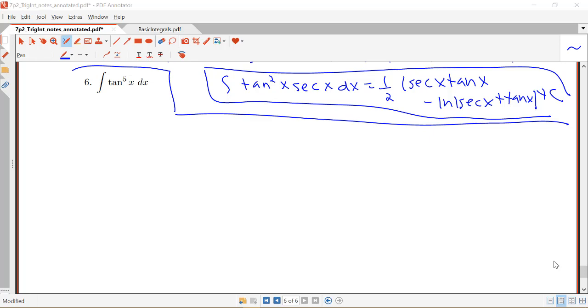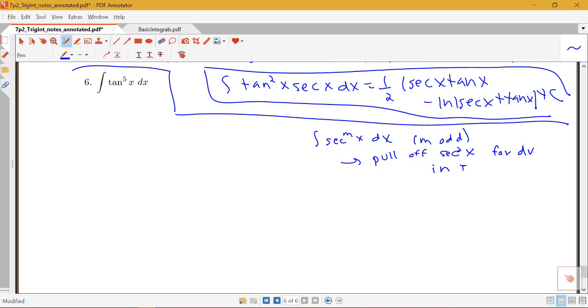Just to remind ourselves how we handle single powers of secant or tangent: if we have a single power of secant where that power is odd, we pull off the secant squared x for dv in integration by parts like we saw in one of our earlier examples.